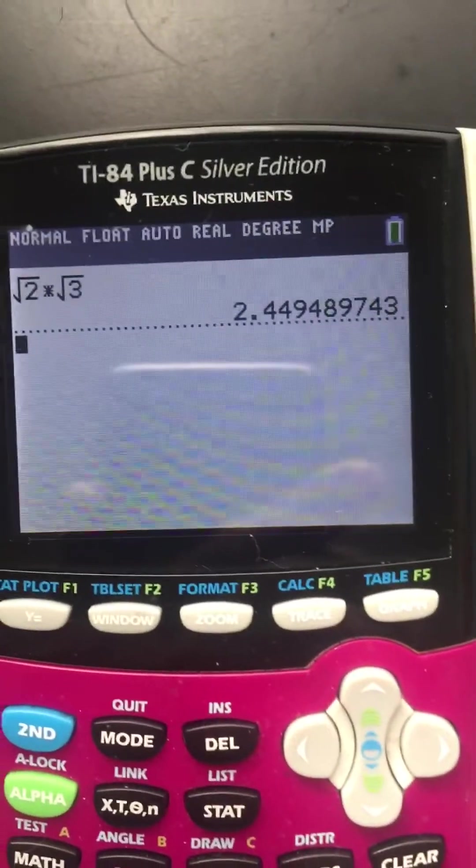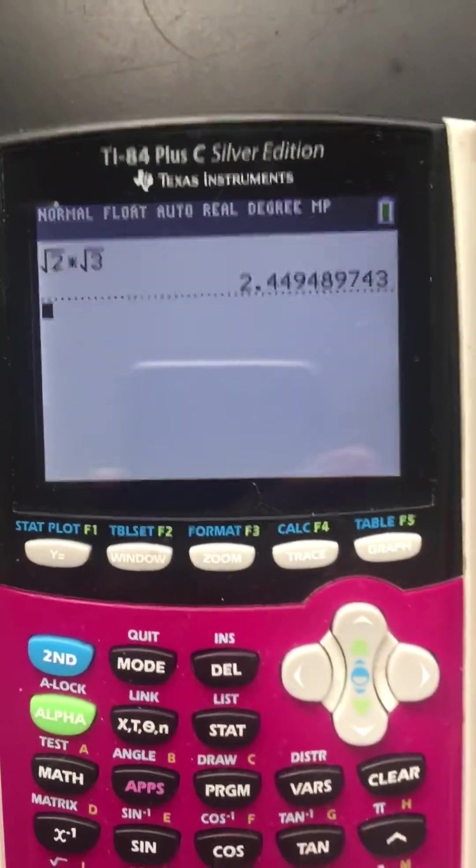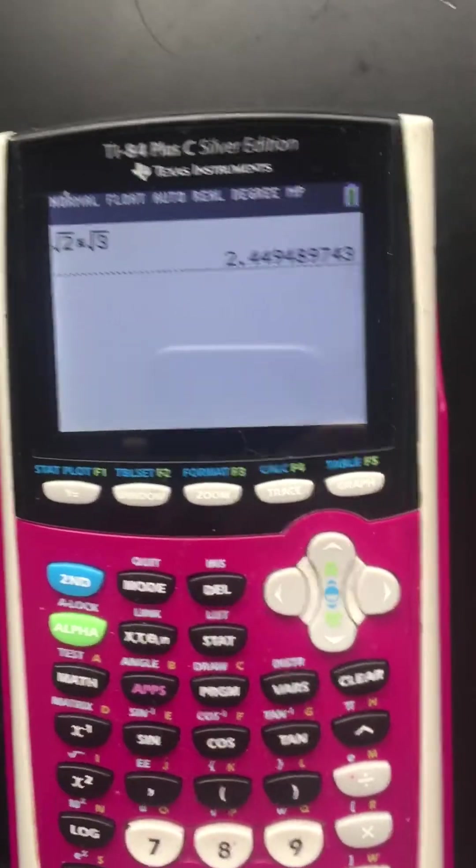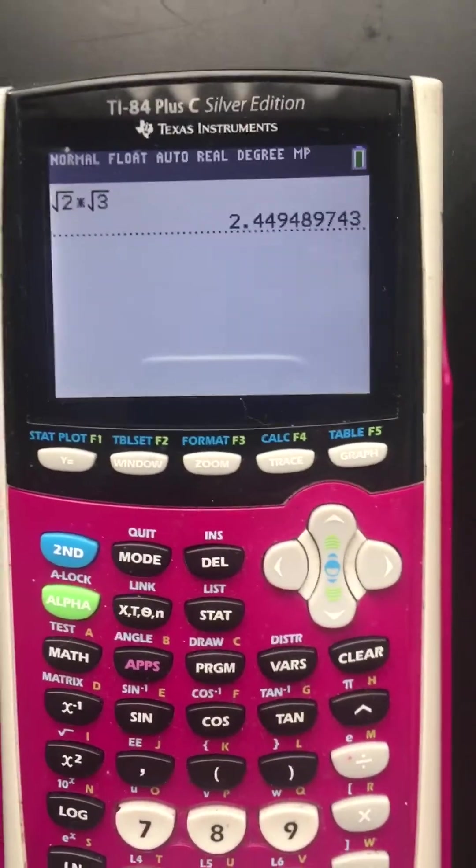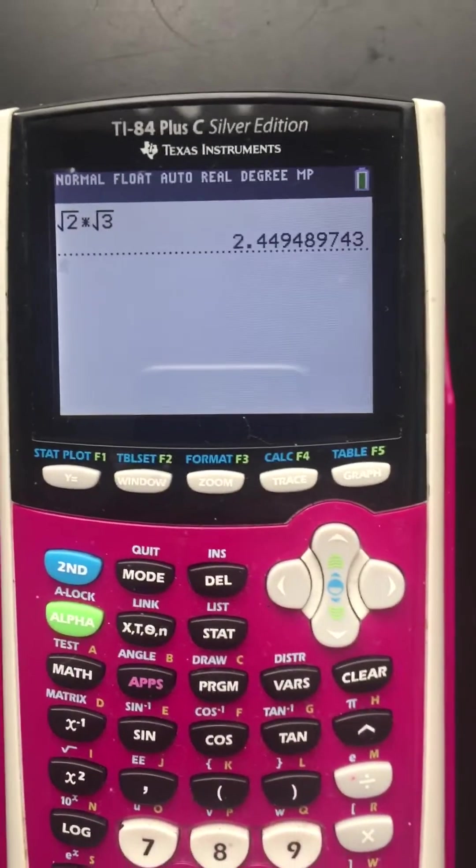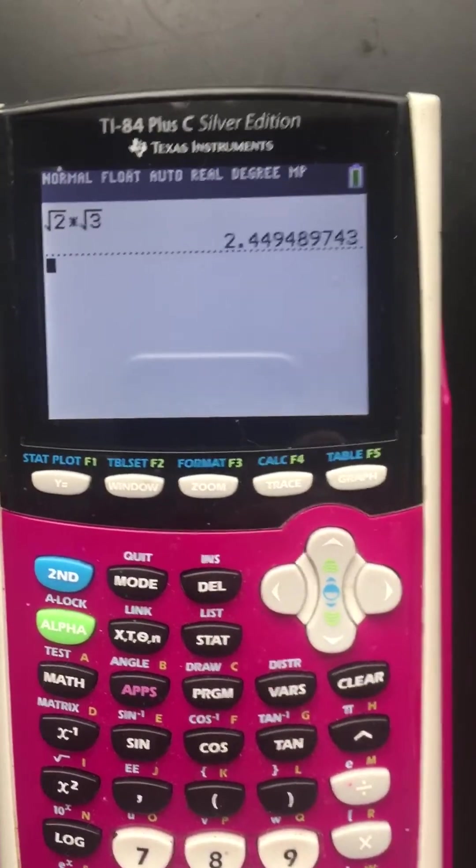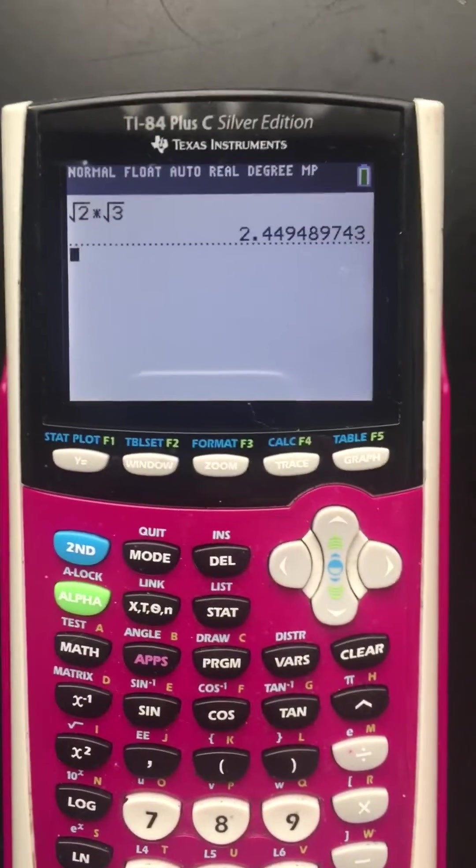And it's going to give me when I hit enter a decimal. You can see that there. Well, in high school especially, I got two boys in college and they say in college they want the decimal. But in high school they want it in radical form. They don't want the decimal. They want the square root symbol in the answer. So how do you get it?